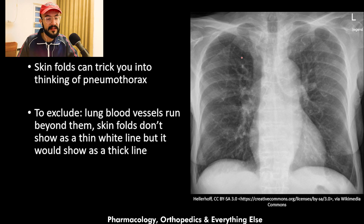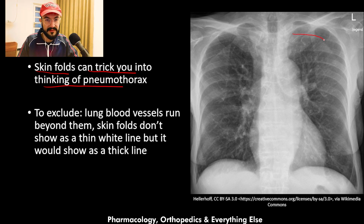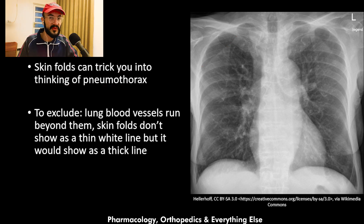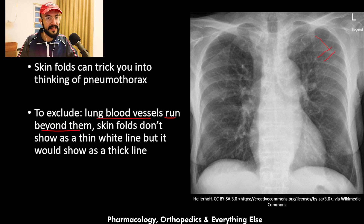An important differential diagnosis for pneumothorax is skin folds. Skin folds can trick you into thinking of a pneumothorax because they resemble a lung edge. You can see skin folds here and here on this x-ray. To exclude pneumothorax, look for lung blood vessels or lung markings — they will run beyond the skin fold. Also, a true lung edge appears as a thin line, whereas a skin fold appears as a thick line.